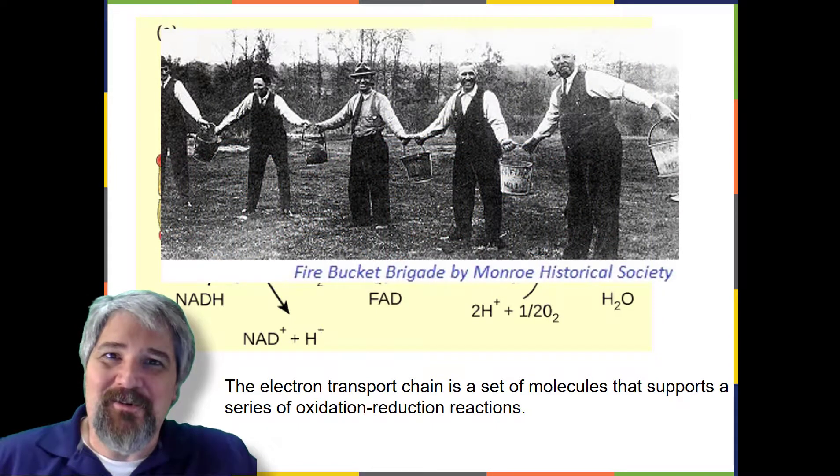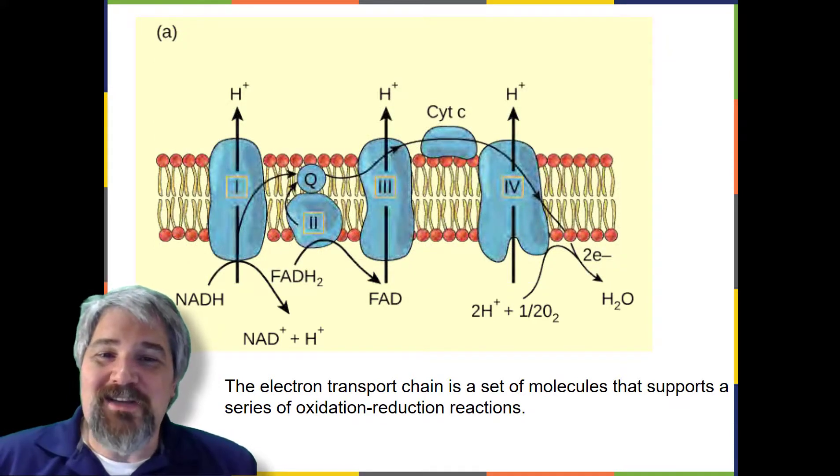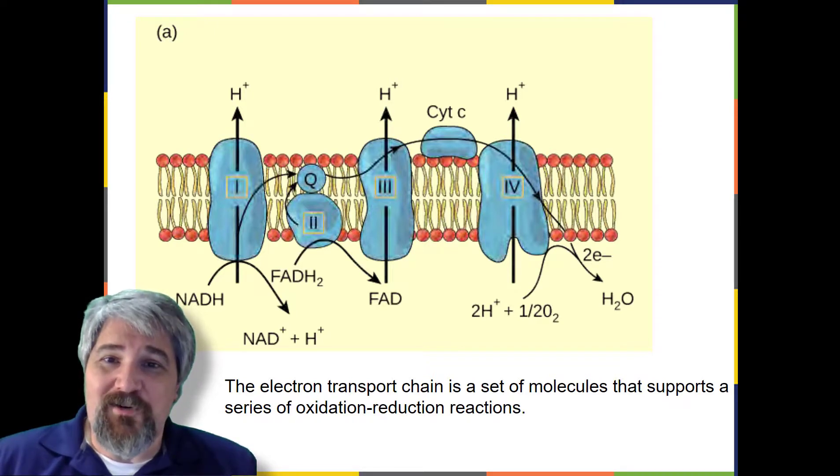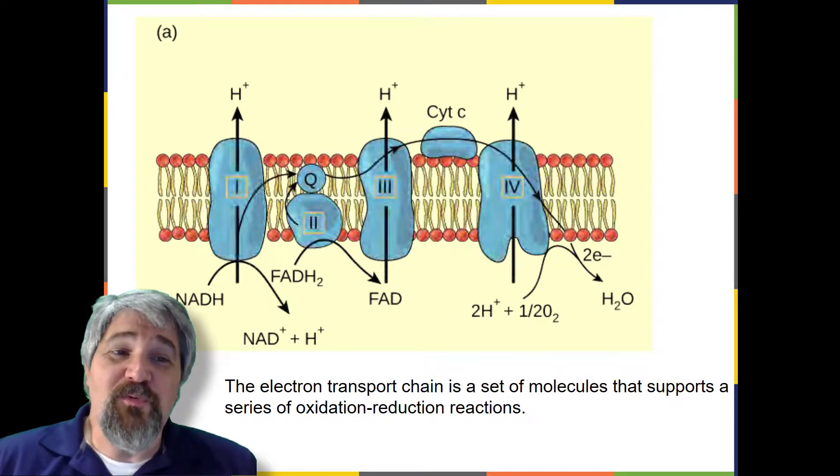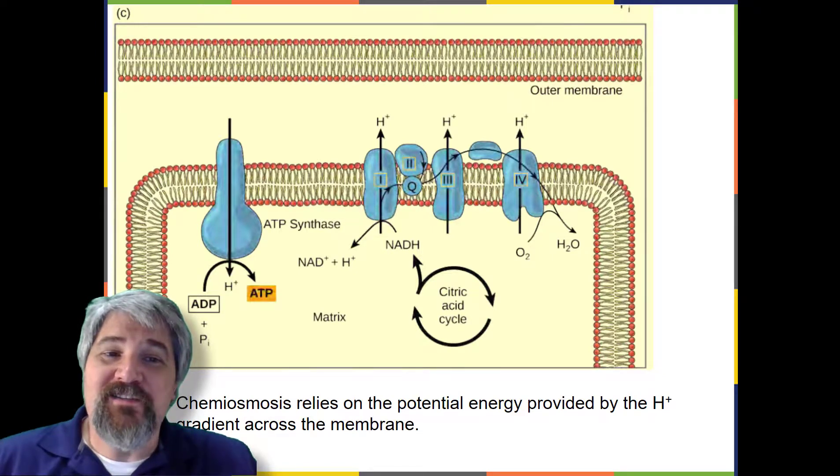Electron transport is a series of chemical reactions that resembles a bucket brigade in that electrons are passed rapidly from one component to the next, to the end point of the chain where oxygen is the final electron acceptor and water is produced. There are four complexes composed of proteins labeled 1 through 4. In this figure, the aggregation of these four complexes, together with associated mobile accessory electron carriers, is called the electron transport chain.